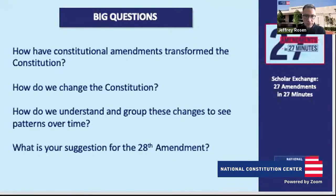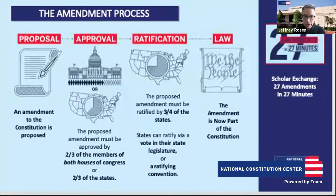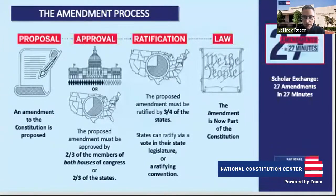How do we change the Constitution? Of course, that's Article 5. We can propose an amendment either by two-thirds of the members of both houses or two-thirds of the states, and then it has to be ratified by three-quarters of the states or by three-quarters of the voters in special ratifying conventions. The big thought here is that it is ratification that gives the amendments the source of supreme law and allows that text to speak in the name of we the people.